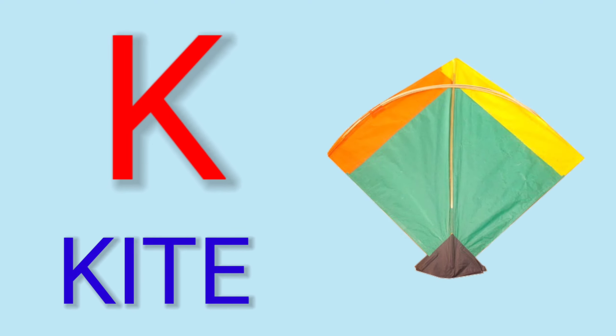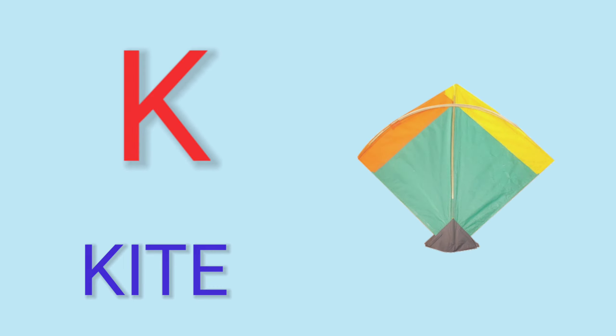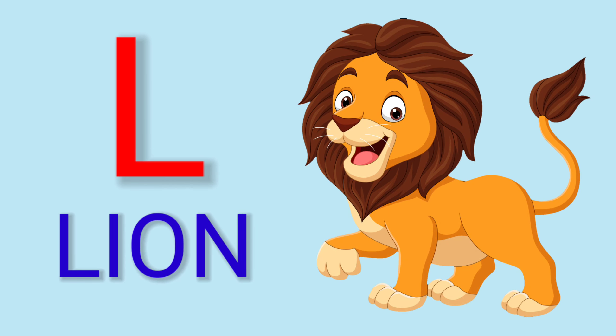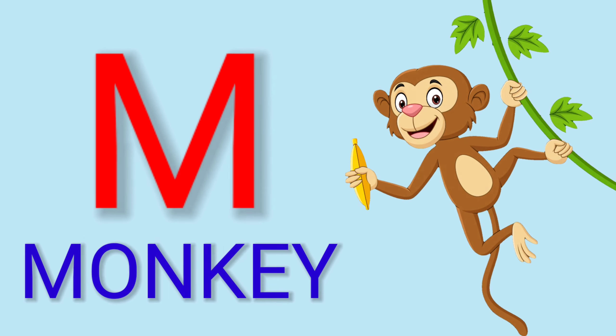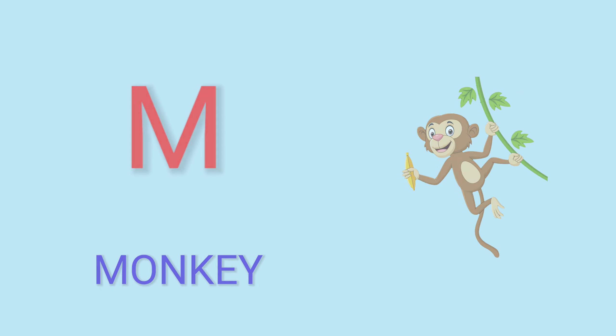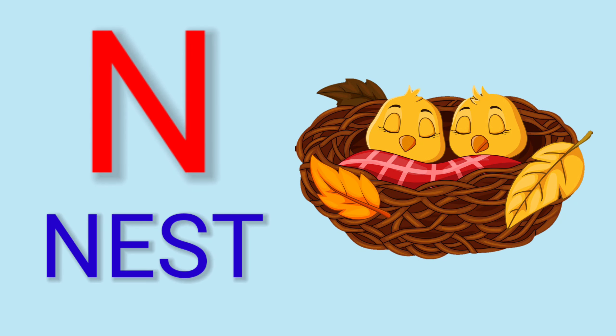A for kite, L for lion, I for roid, M for monkey, N for nest.